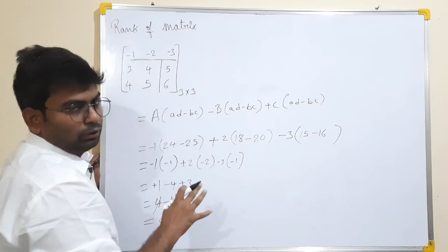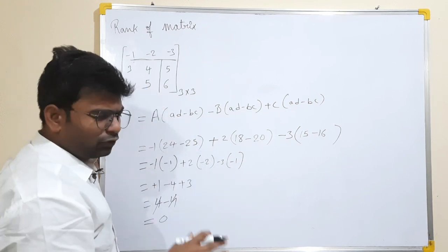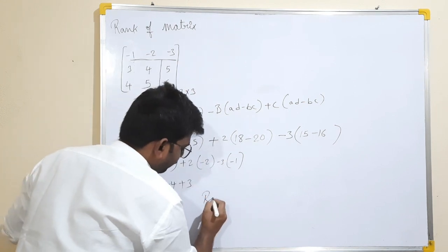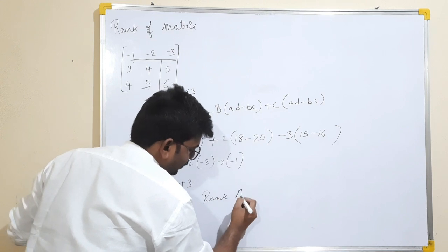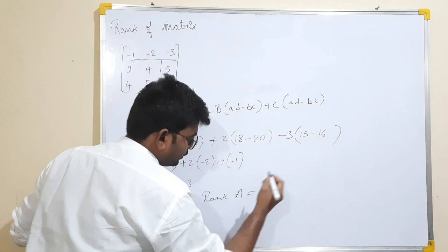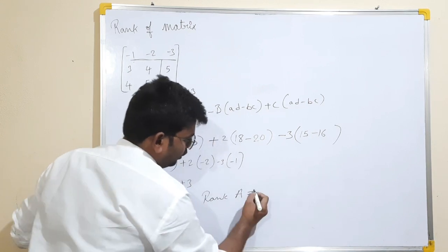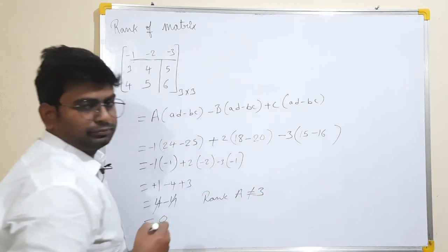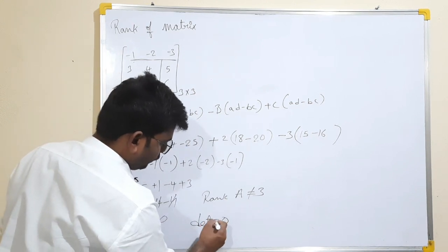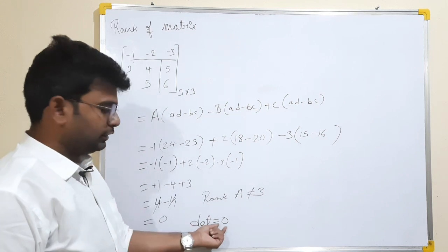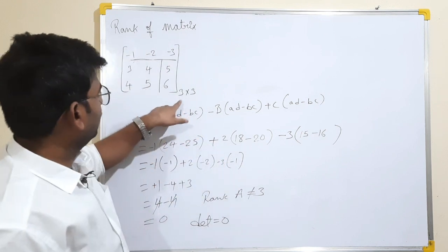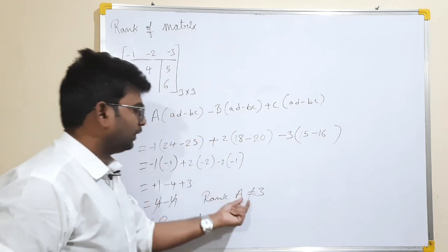Matrix A and B and C — this matrix A. The rank of matrix A is not equal to 3, because the determinant of A is equal to 0. Because rank of A is not equal to 3, because it is a 3 into 3 matrix — the rank 3 is not.